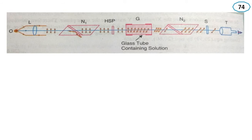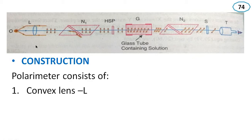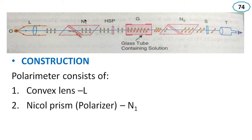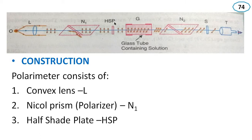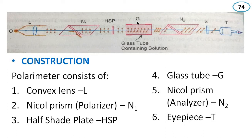Here is a diagram of a polarimeter. The construction of a polarimeter is as follows. It consists of a convex lens L. There is a Nicol prism represented by N1. There is a half-shade plate represented by HSP. There is a glass tube represented by G, which contains the solution. There is a second Nicol prism represented by N2, which acts as an analyzer, and there is a slit followed by an eyepiece represented by T.